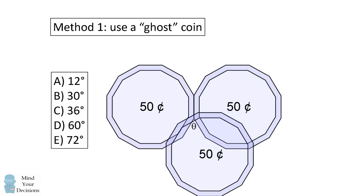We just had Halloween, and one method to solve this is to use a ghost coin. We'll remove the table, and we'll make another copy of the second coin. Now let's translate this coin down.